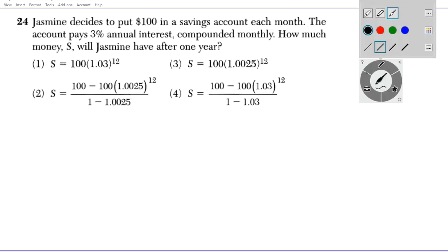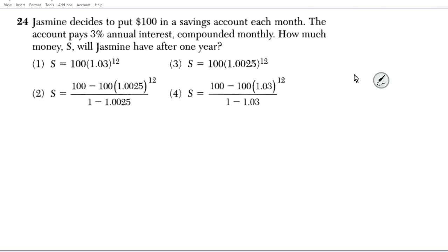Question number 24: Jasmine decided to put $100 in a savings account each month. The account pays 3% annual interest compounded monthly. How much money S would Jasmine have after one year?